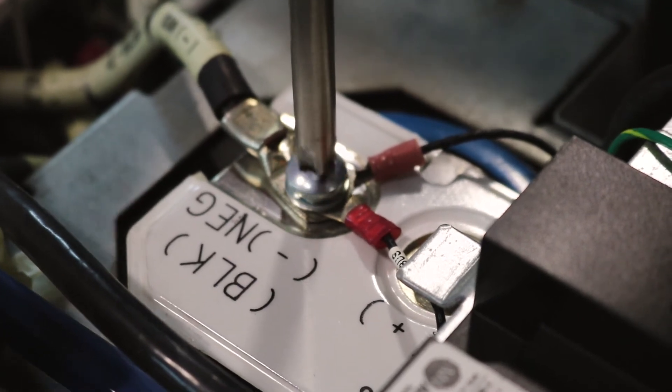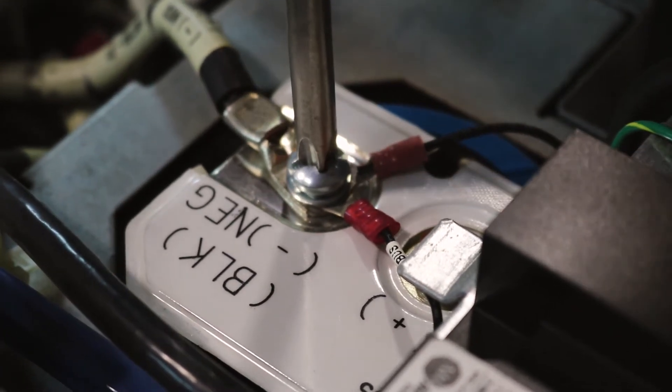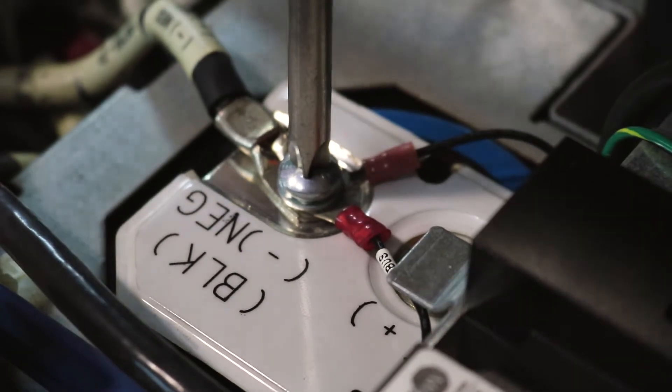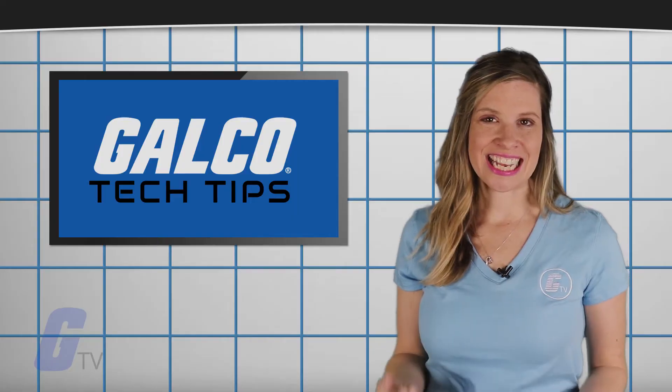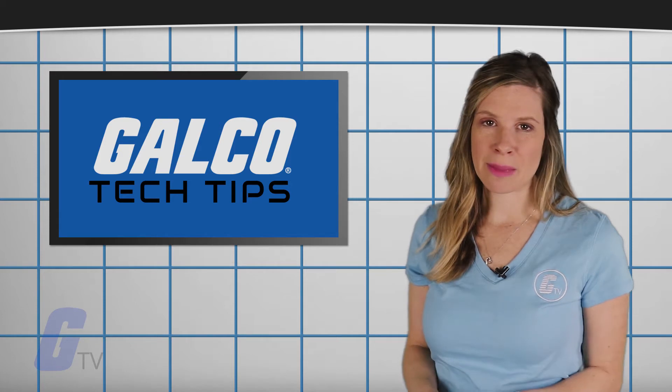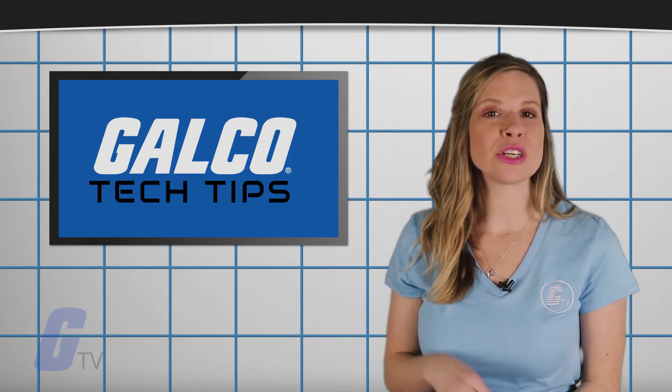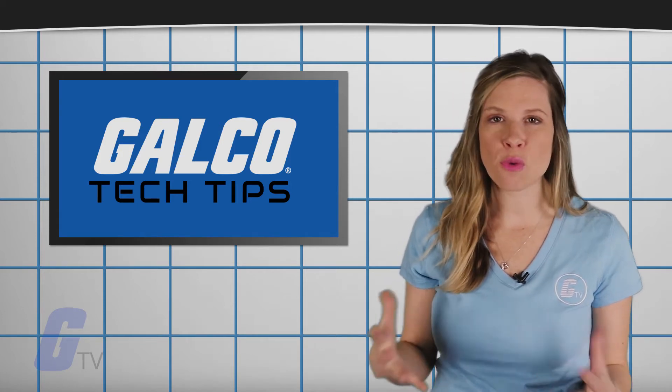Screws have a maximum clamping power at a torque value specific to its size, shape, and composition. Exceeding that torque value can permanently reduce the clamping power of that screw by reducing its elasticity and deforming it.